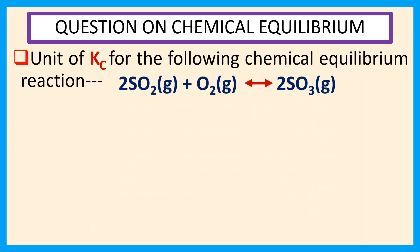Unit of Kc for the following chemical equilibrium reaction: 2SO2(g) + O2(g) ⇌ 2SO3(g). Choices